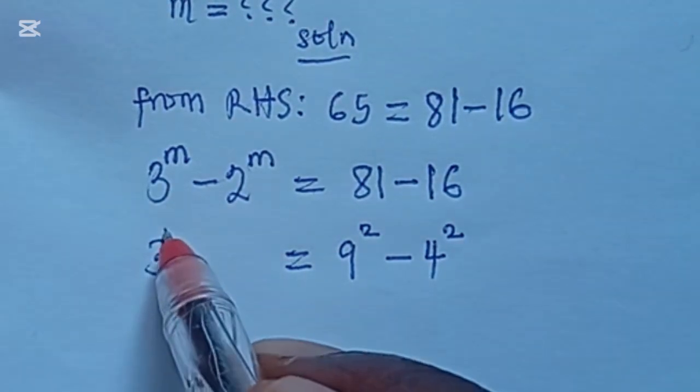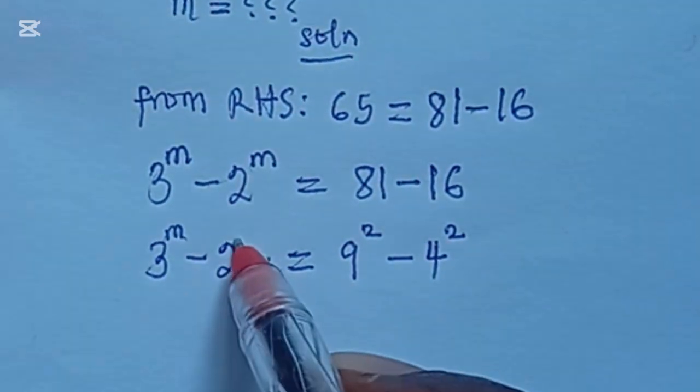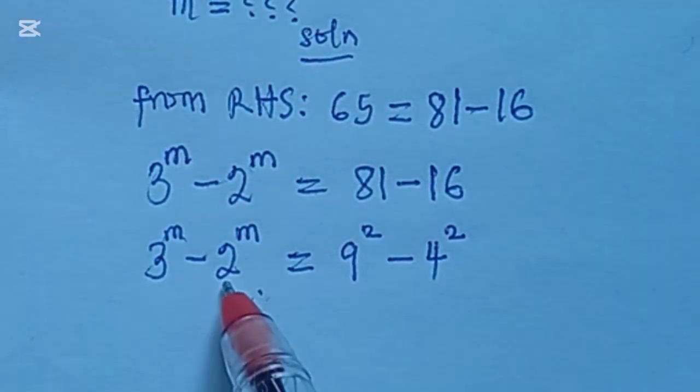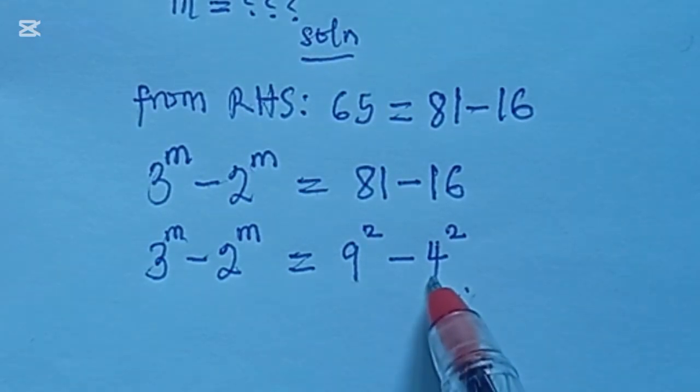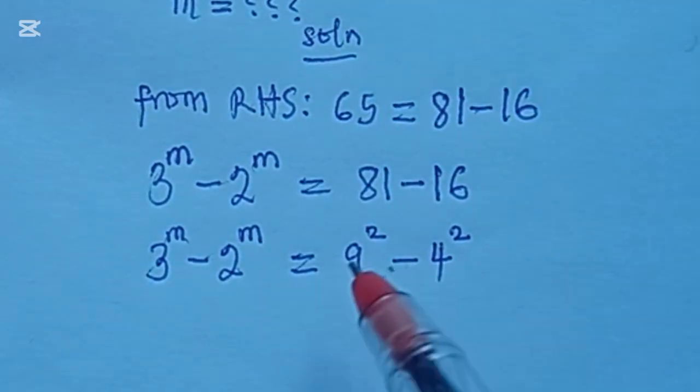But if you look on the left-hand side, we still don't have the form. What we have is 3 and 2. So let's see if we can write this as a base of 3 and as a base of 2.